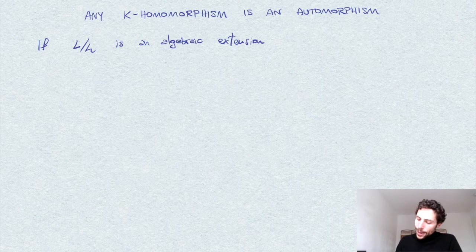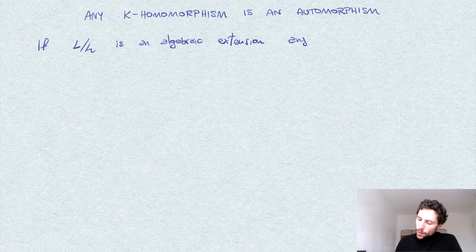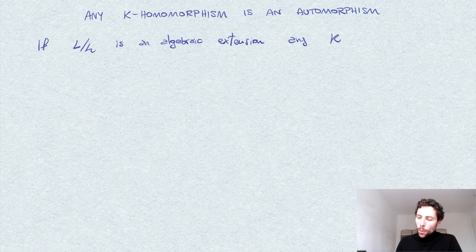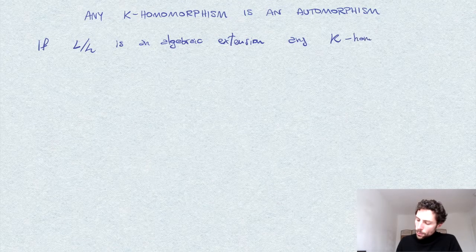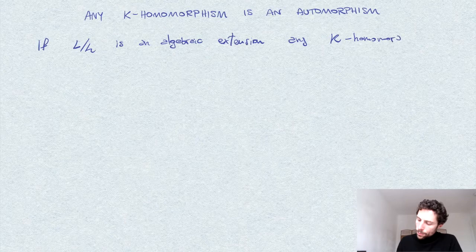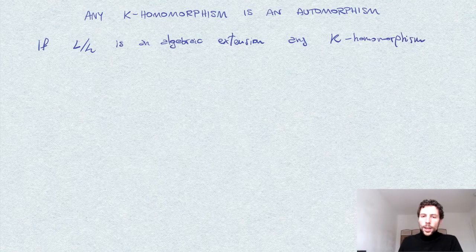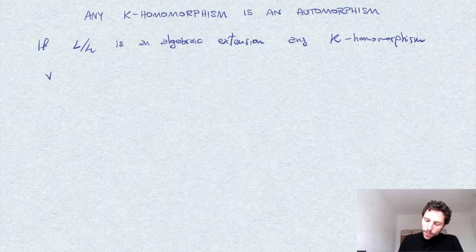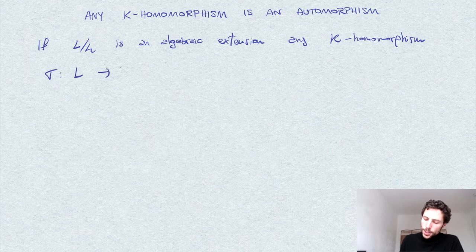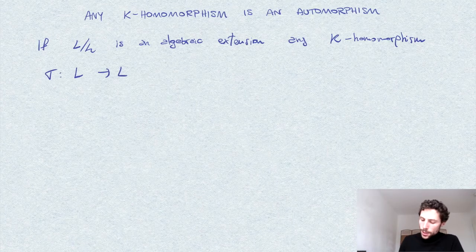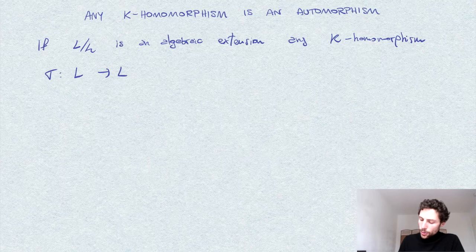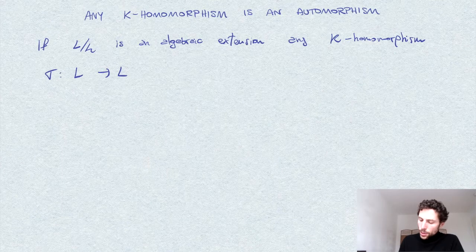And then any k-homomorphism, so sigma, let's call it sigma, from L to itself, is an automorphism. This is an isomorphism of L to itself.